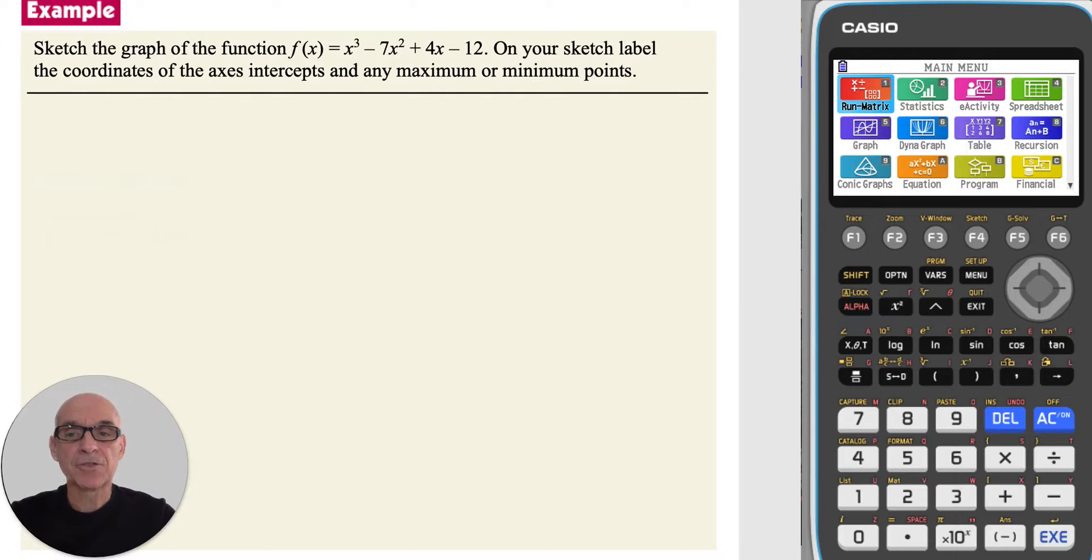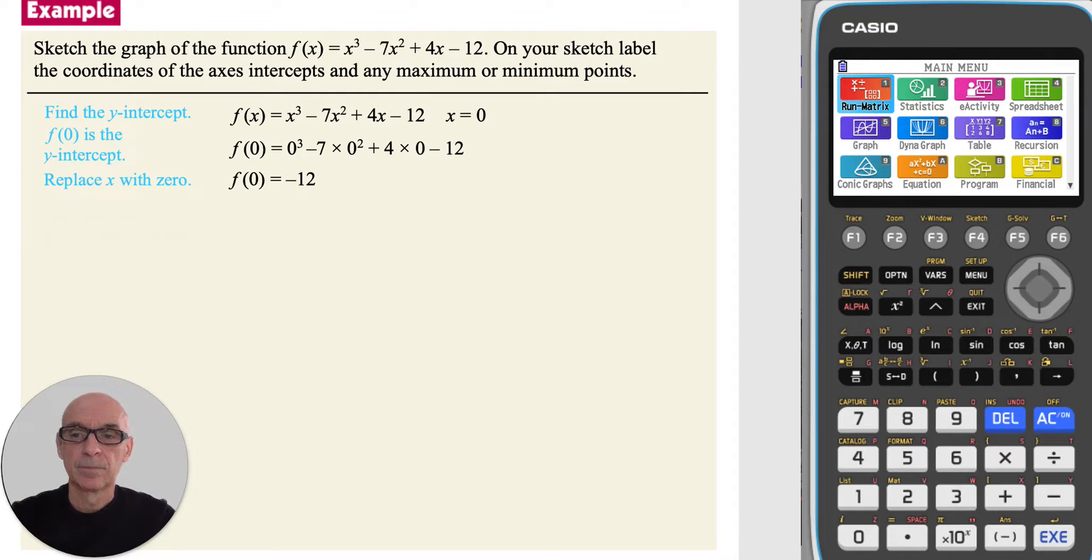In this question, we're asked to sketch the graph of the cubic function given, and on our sketch to label the coordinates of the axes intercepts and any maximum or minimum points. If we start by finding the y-intercept, we can do this by replacing x with 0, giving a value of negative 12.